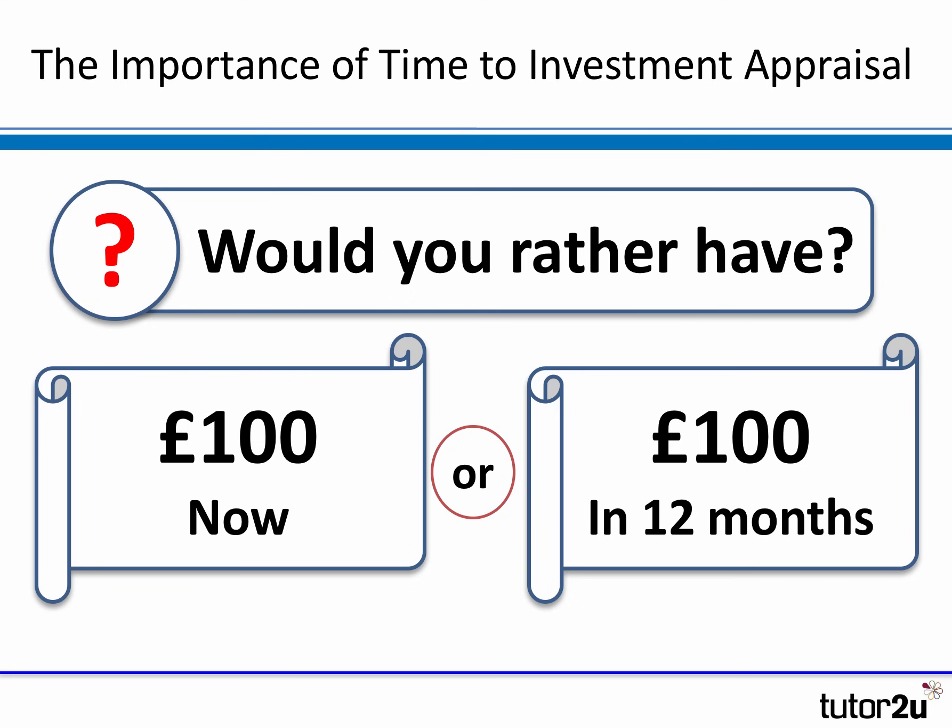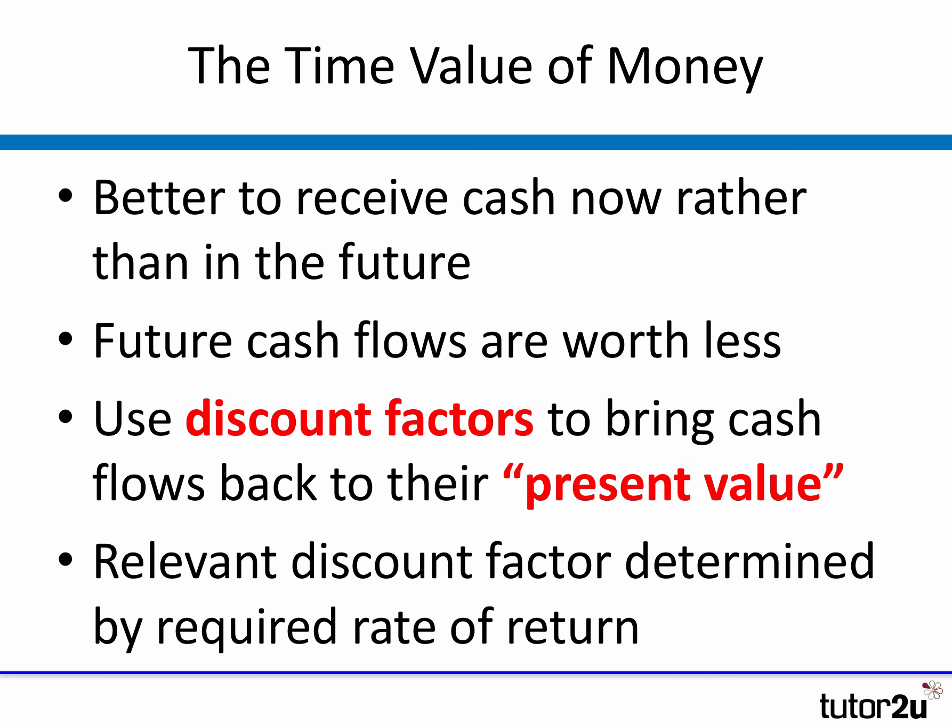That's basically the idea of net present value. It tries to adjust for the risk of future cash flows, but also to bring them back into their monetary value now, rather than two, three, four years in the future. NPV is all about the time value of money — the basic idea being it's better to receive cash now rather than in the future. Future cash flows, whilst they are worth something, are worth less than receiving the same amount now. What you do with these calculations is use what's known as a discount factor, applied to each cash flow to bring it back to an estimate of its present value now.